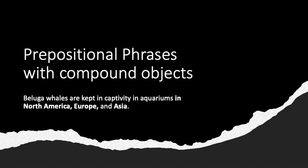Now let's look at prepositional phrases with compound objects. 'Beluga whales are kept in captivity in aquariums in North America, Europe, and Asia.' North America, Europe, and Asia are three objects of the preposition, with Europe and Asia joined by the conjunction 'and.'